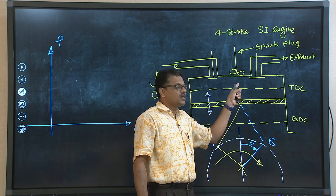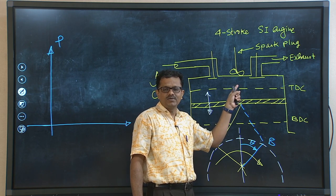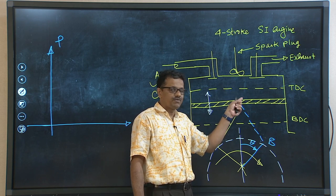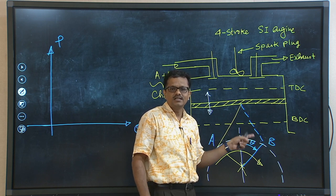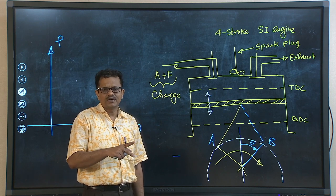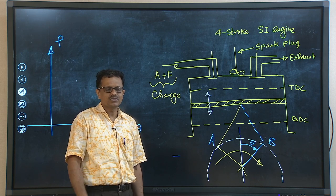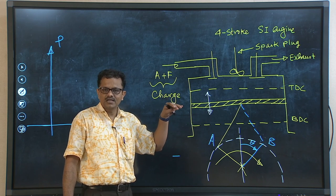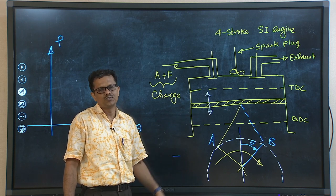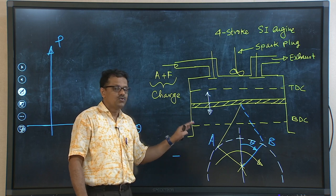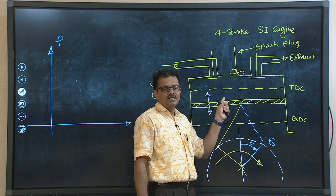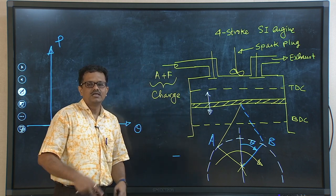The initiation of combustion by the spark plug ignites the entire compressed charge. We assume that combustion is completed almost instantaneously while the piston is at TDC, so the volume remains essentially constant — this is why we represent heat addition as a constant-volume process in the PV plane. The resulting high pressure creates a thrust on the piston face, driving the piston back from TDC to BDC, which is the power stroke.